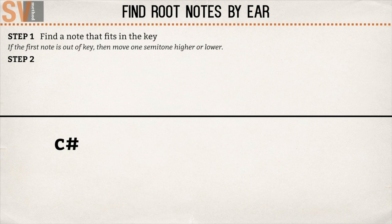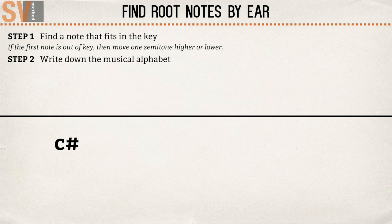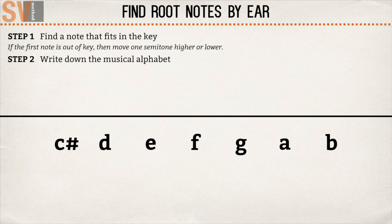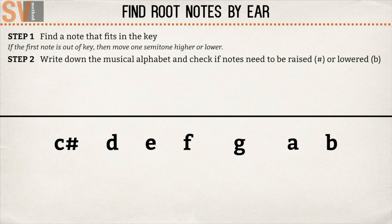Step 2: Write down the musical alphabet. We'll start from the note that we already know is in key, C sharp. Now we have this overview. We're going to check if notes need to be raised or lowered. You play the note while the chord progression is playing and see if it fits the key.